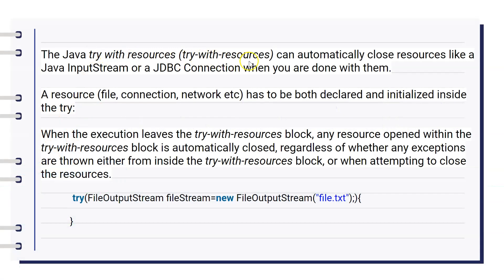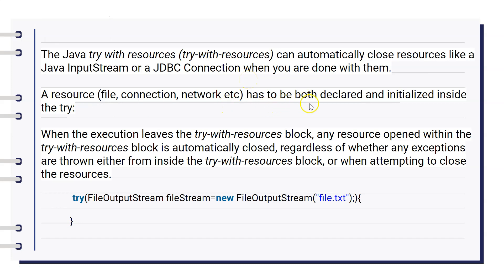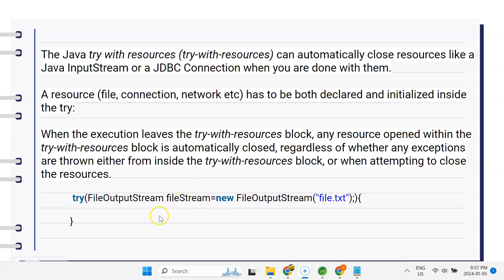Try-with-resources can automatically close a resource like a Java InputStream or a JDBC connection once you are done with it. The resource has to be both declared and initialized inside the try block. A resource can be anything — a file connection, network, FileInputStream, OutputStream, BufferedReader — even a custom resource. For that, your Java class should implement the AutoCloseable interface.